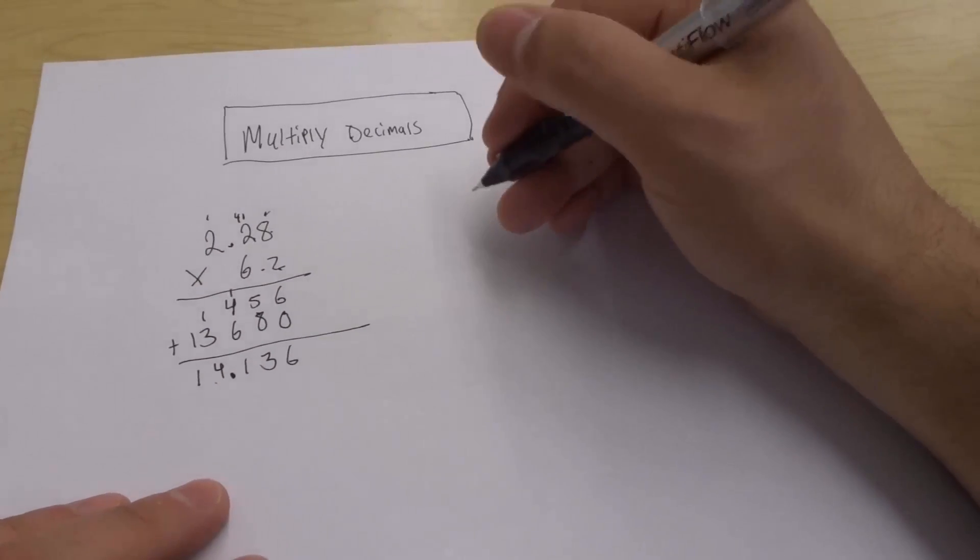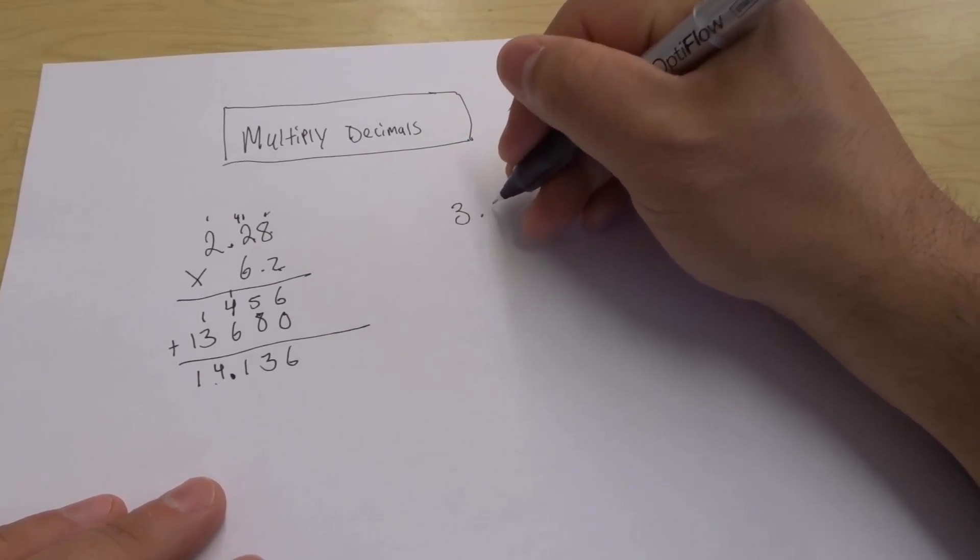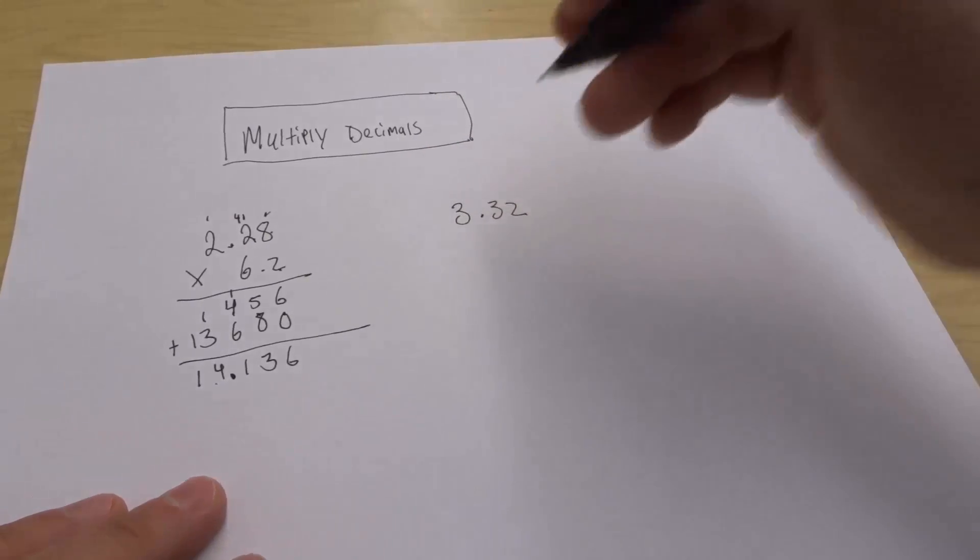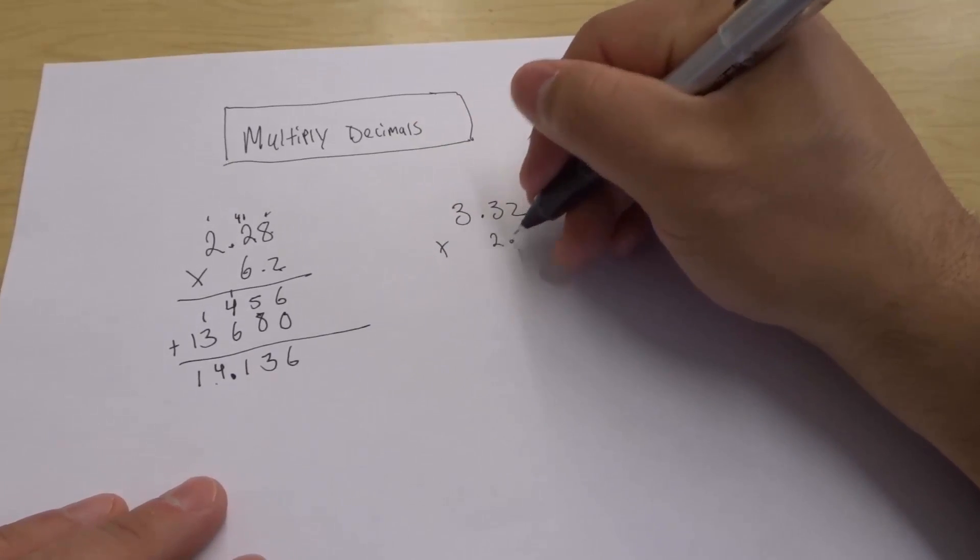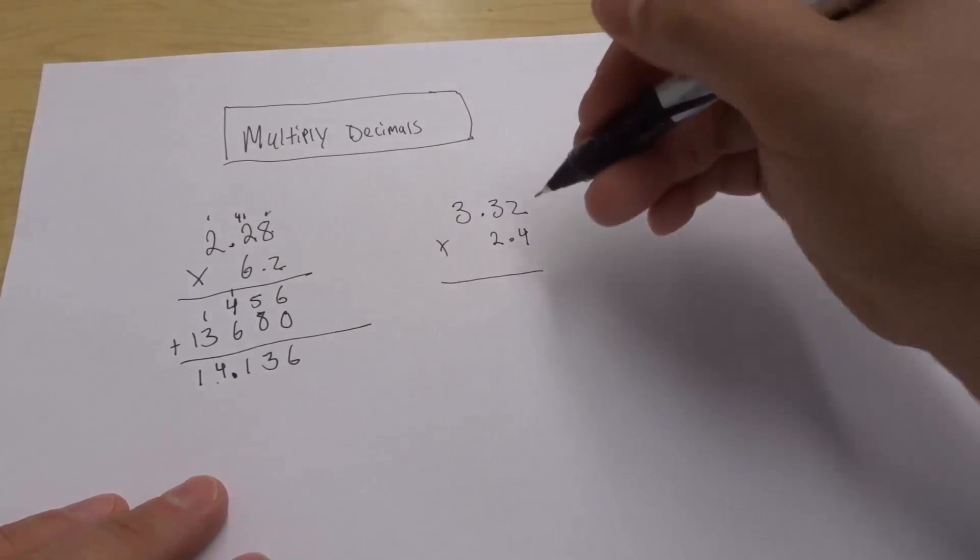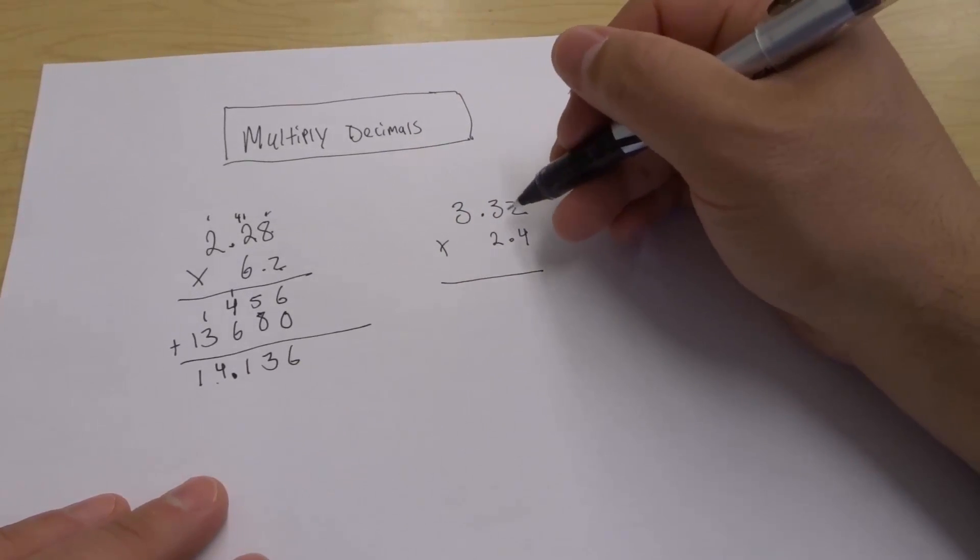Let's go over one more example. Let's say we did 3.32 and multiply that by 2.4. So once again, we're going to multiply as if there are no decimals.